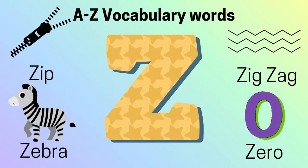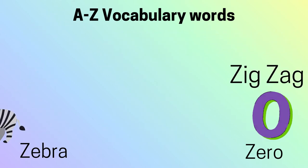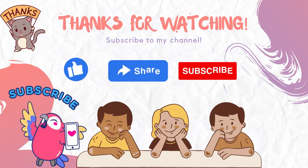Letter Z. Z-I-P, Zip. Z-E-B-R-A, Zebra. Z-I-G-Z-A-G, Zig-Zag. Z-E-R-O, Zero.